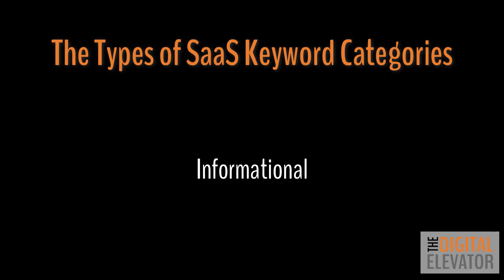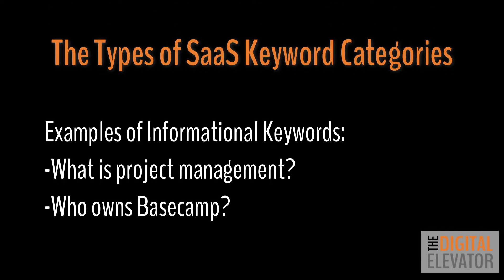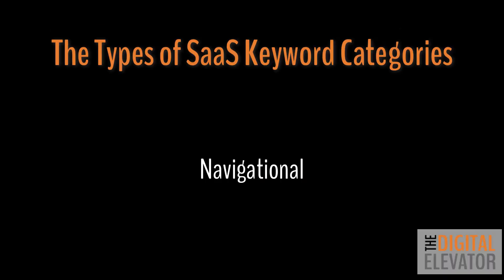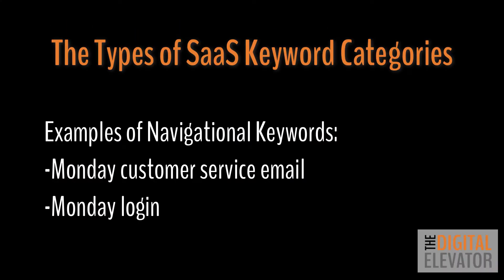Informational keywords have little to no purchase intent and simply provide information. These types of keywords win in search volume but lose out in terms of helping with conversions. Examples include what is project management and who owns Basecamp. Navigational keywords are simply keywords used when someone wants to get to a specific destination, such as Monday customer service email or Monday login.